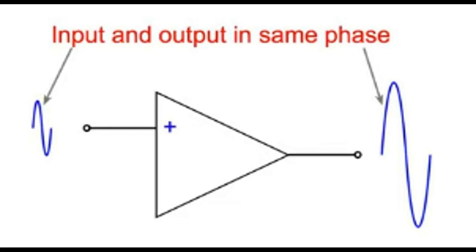When a signal is applied to the inverting input, it will appear 180 degrees out of phase at the output. Its output is inverted.